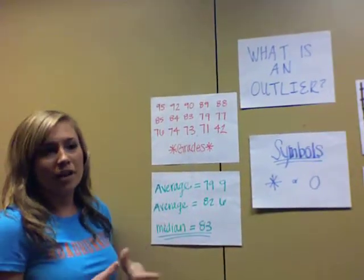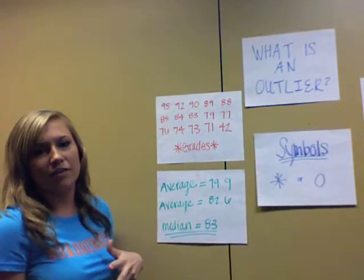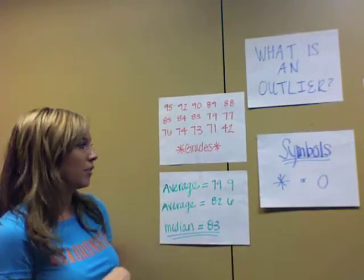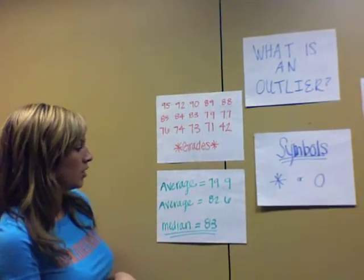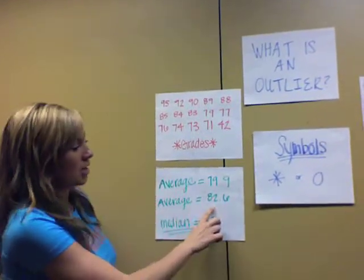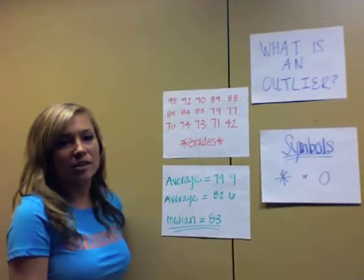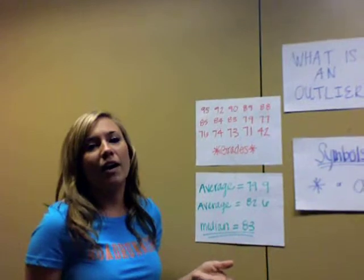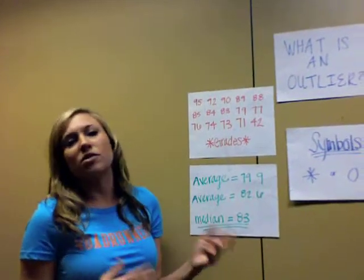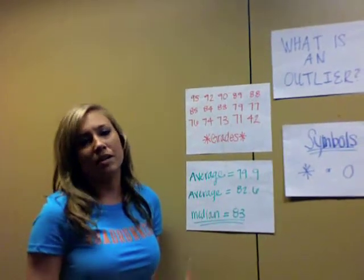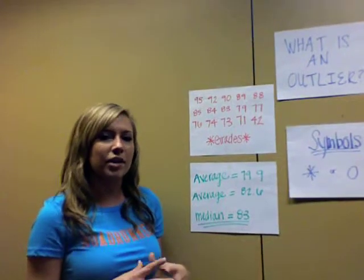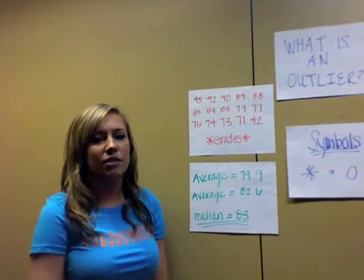An outlier is a value that's farther away from all the other values. Whenever you disregard that value, your average goes up to 82.6. This shows how outliers can distort the central value, and sometimes taking the median over the mean is a better way to find the center.